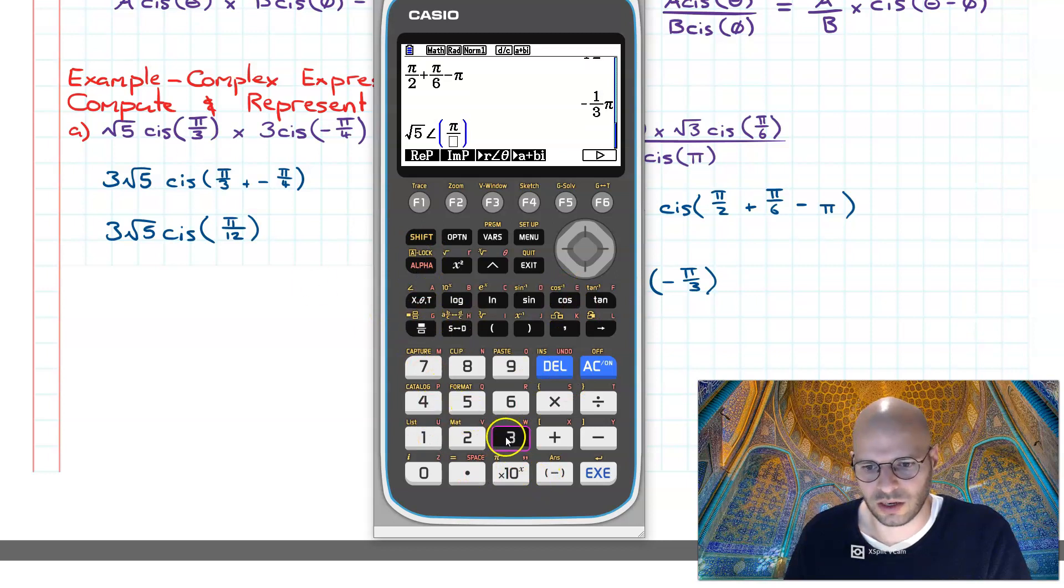So we go pi over three, then we're going times three angle negative pi over four.